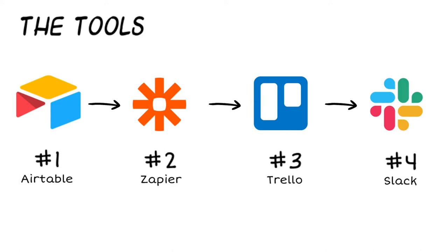Zapier is an automation tool for moving data between web apps, and we used Zapier to move data from Airtable into Trello. We used Trello, a collaborative project management tool, to organise the tasks. Once they've been created in Airtable and pushed as individual cards to Trello, we used the Trello board — set up in an agile way using a Kanban approach — to manage the project.